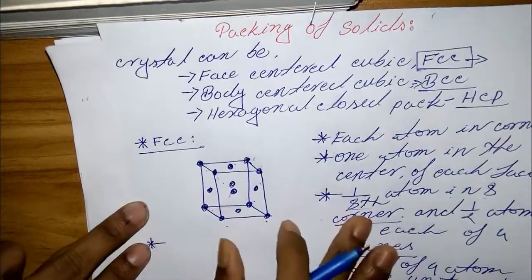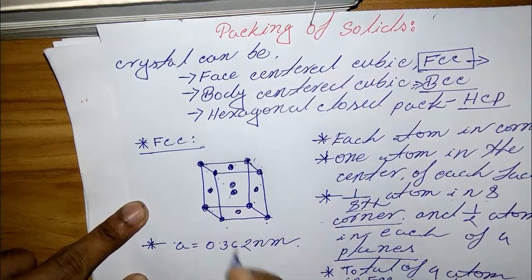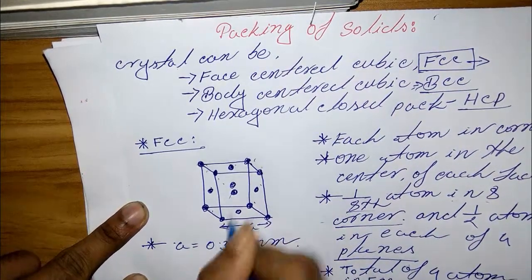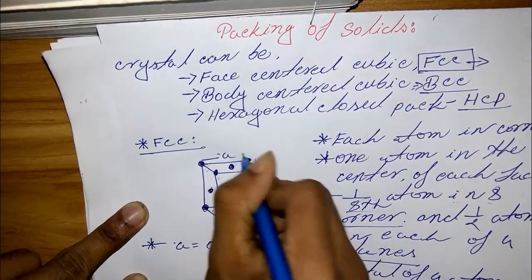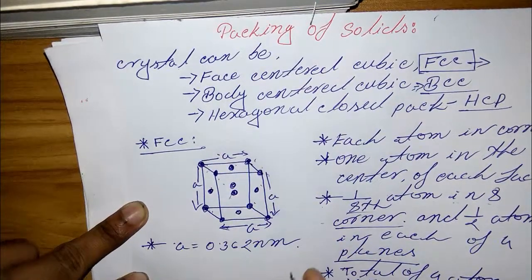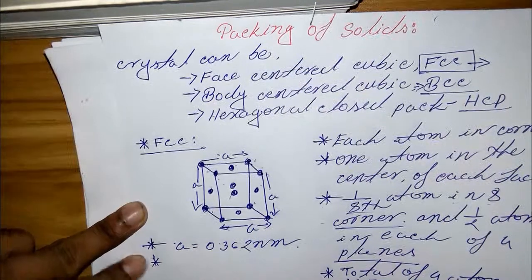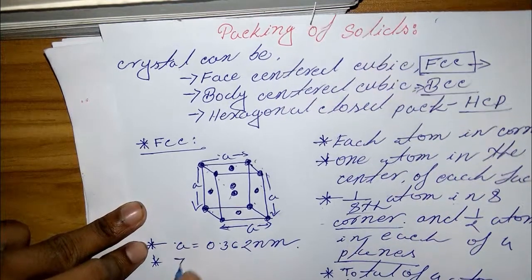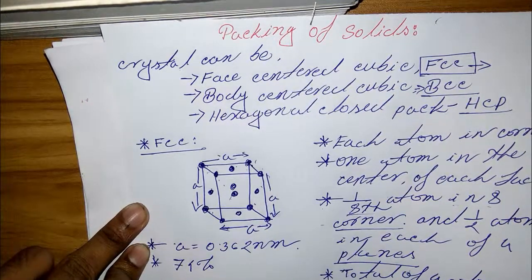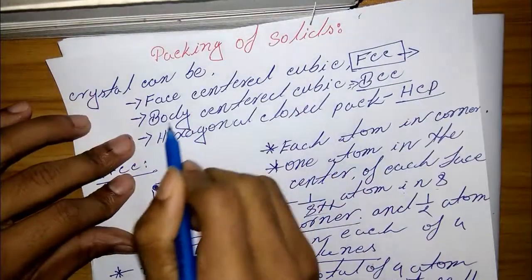An example of FCC is copper, where the lattice parameter a equals 0.362 nanometers — that is, the edge length of the unit cell. FCC is a close-packed structure with a packing density of 74 percent. Now I will discuss BCC, which means body-centered cubic.